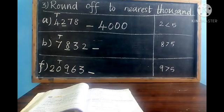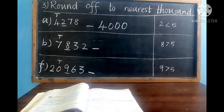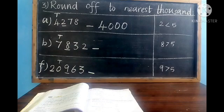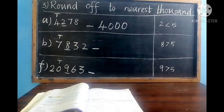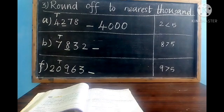If we want to round off to nearest thousand, underline the next digit — the next digit of thousands is the hundreds place. In A question, 2 is at the hundreds place. 2 is smaller than 5, so to write the nearest thousand we write 4000 as it is.